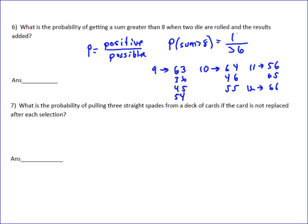So the probability of getting a sum greater than 8 is 10 over 36. You always want to simplify, and that simplifies to 5 over 18. So the answer to that question is 5 over 18.